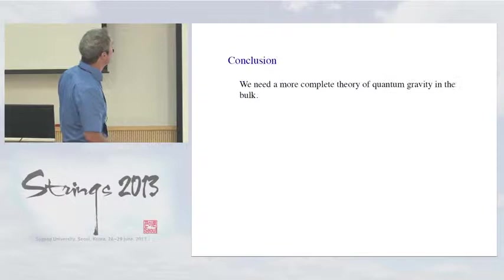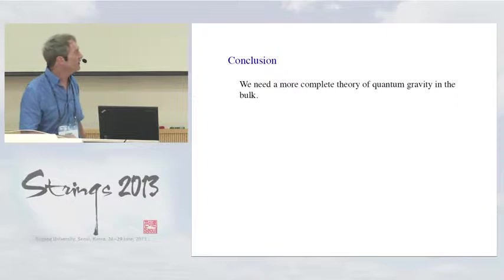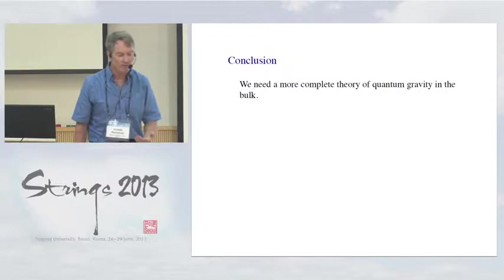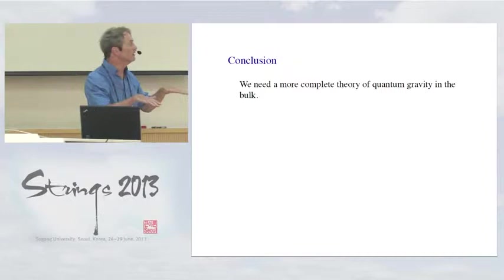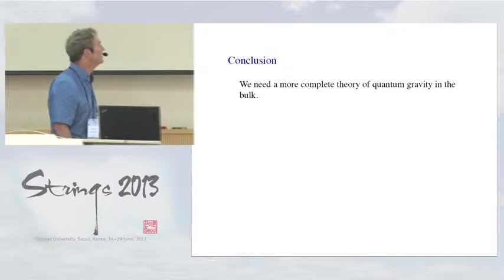So, I'm out of time, just in time. From thinking about this subject a great deal, I think that what we're really missing is a more complete theory of quantum gravity in the bulk. Everything you hear from me, and from other people working on this subject, is these indirect logical arguments, not things that really follow from a fundamental theory of gravity in the bulk. And I think that it points to a big gap in our understanding of quantum gravity. Thank you.